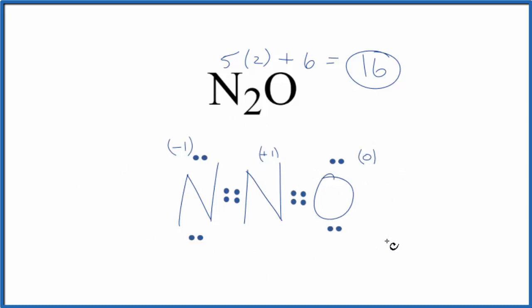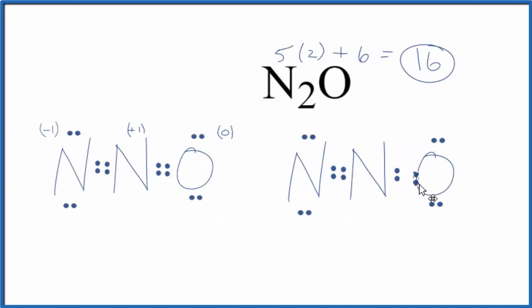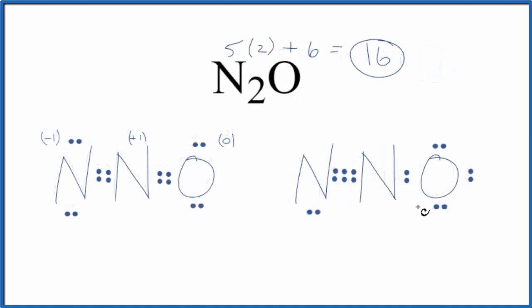There is another way to draw this. It would be a resonance structure of N2O. We could have a triple bond here and then a single bond on the oxygen. We can move this over here and then we can move this pair to form a triple bond.